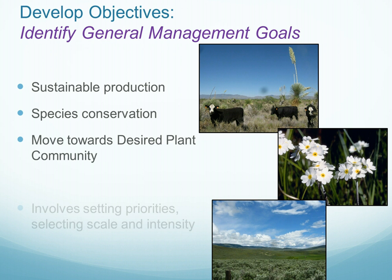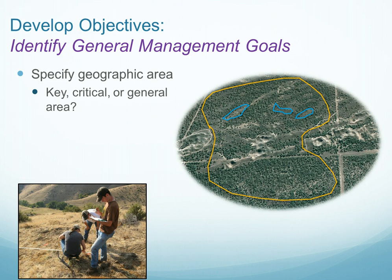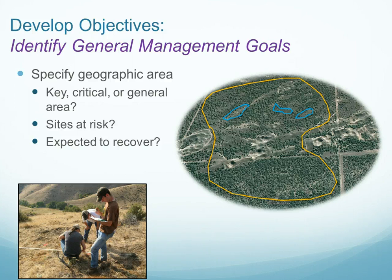We also need to identify our general management goals. Sometimes we are interested in sustainable management and production, sometimes species conservation, or we may want to manage an area so that it moves towards a desired plant community. Always this step involves setting priorities and selecting the scale and intensity of monitoring. We also need to identify our general management goals in terms of the specific geographic area of interest — whether we are focusing on a key or critical area or a larger area overall — and whether our sites are at risk of degradation or are expected to recover.